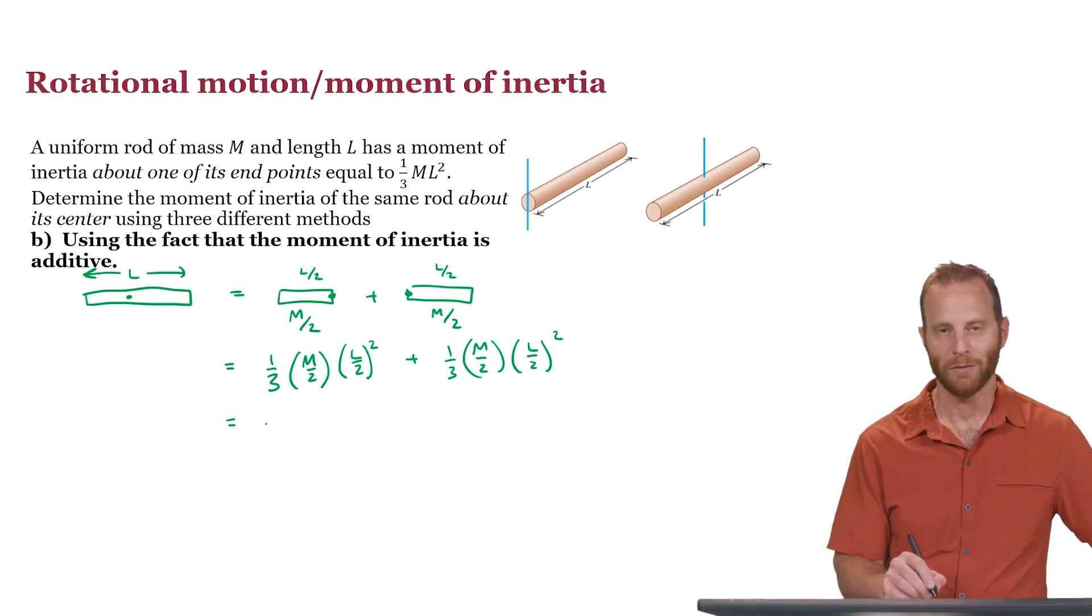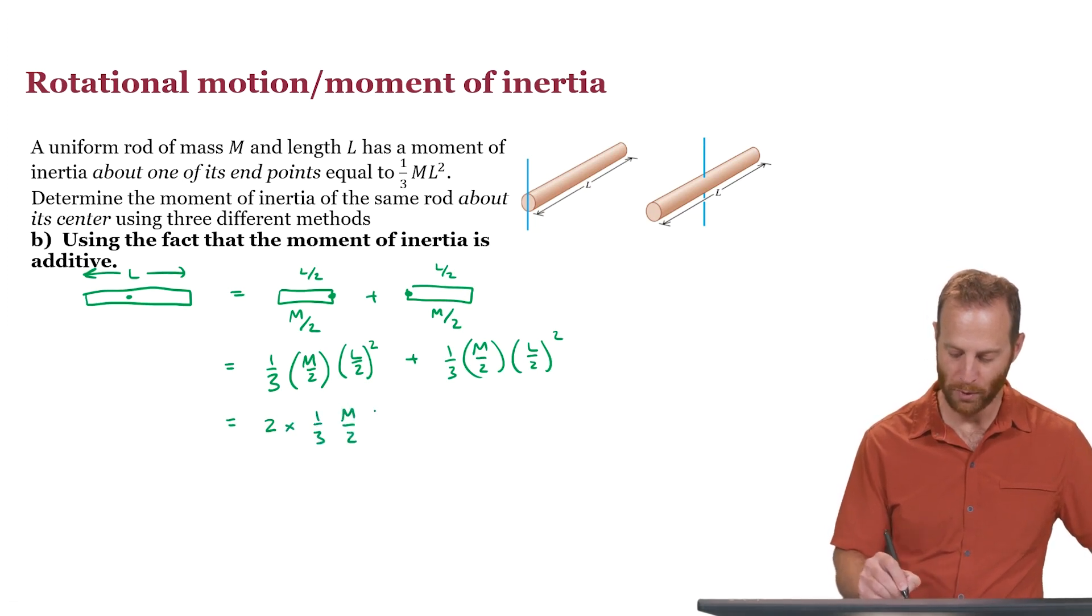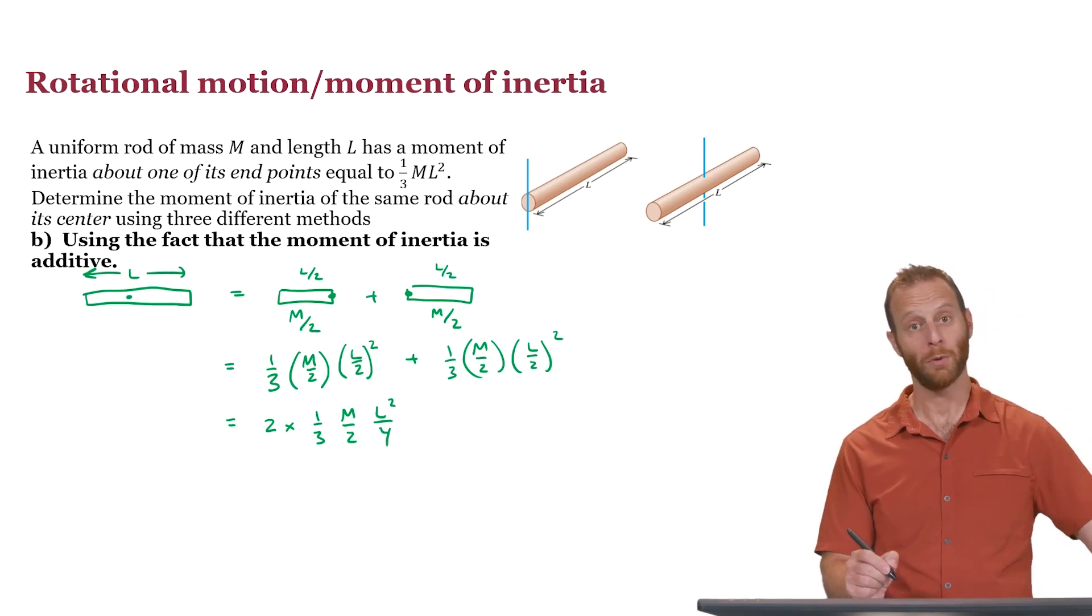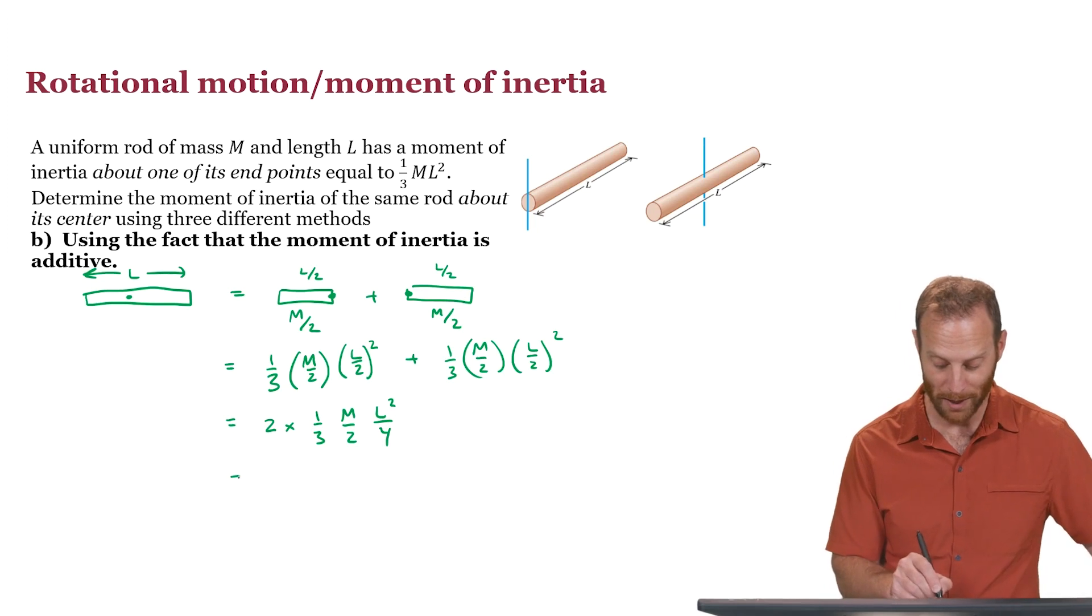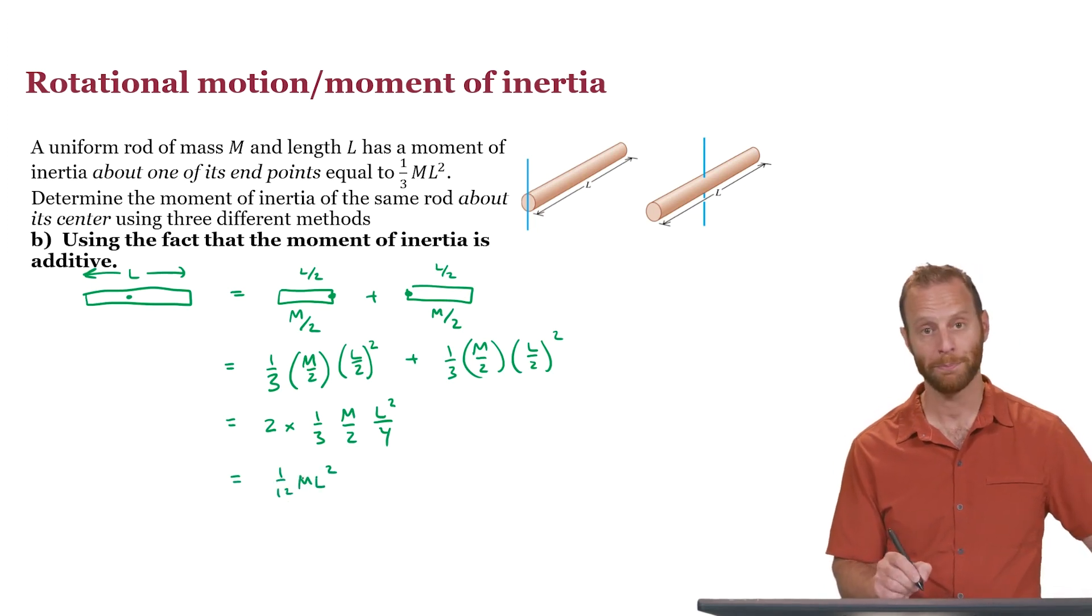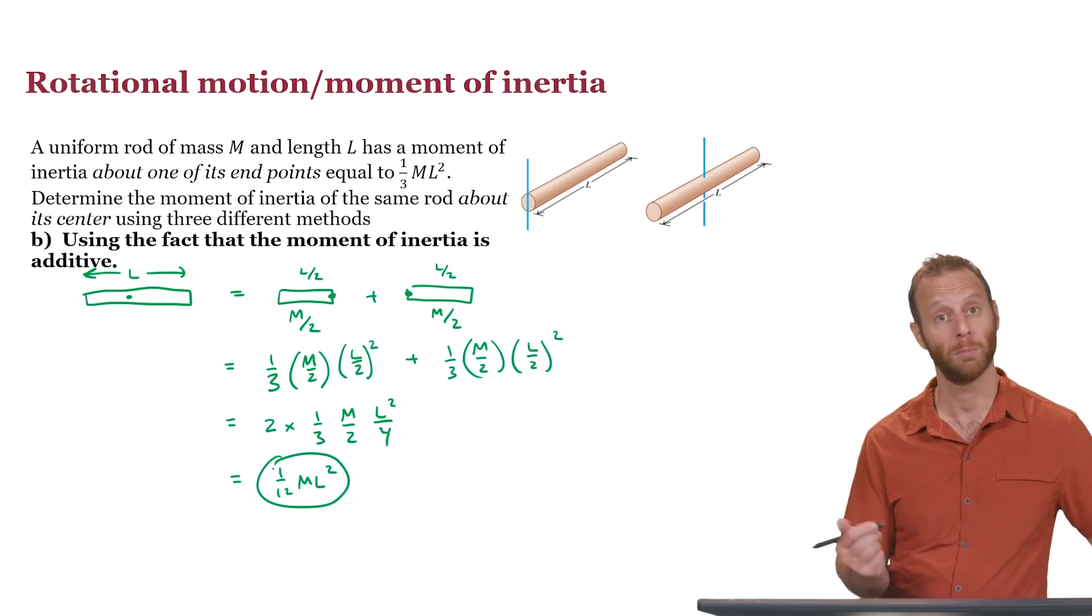What we end up with effectively is 2 times this stuff, so this is 2 times one-third m over 2, l squared over 4, one of those factors of 2 cancels, we're ending up with 3 times 4 in the denominator, and so we end up with a one-twelfth ml squared, which is consistent with the previous result.